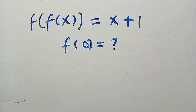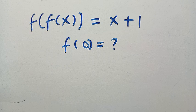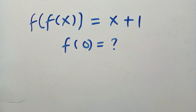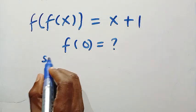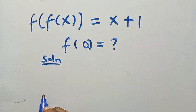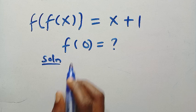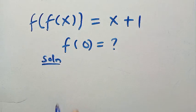Good day viewers, you are welcome. We have an interesting functional equation, and in this video I'm going to be showing you three different things: first, how to find f of zero; second, how to find the general formula for f of x; and third, how to prove the answer is correct by substituting back the value of f of x into the original function. So let's get into it. We are given f of f of x equals x plus one, and we want to get f of zero.